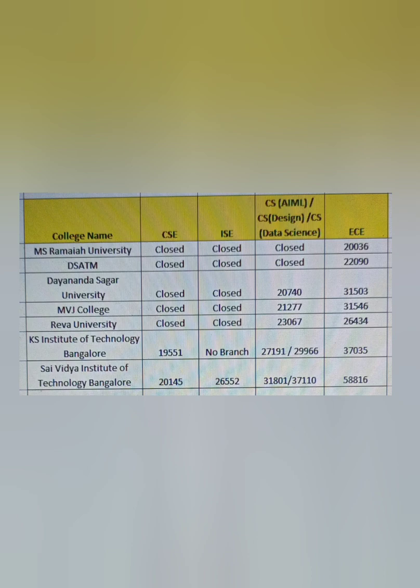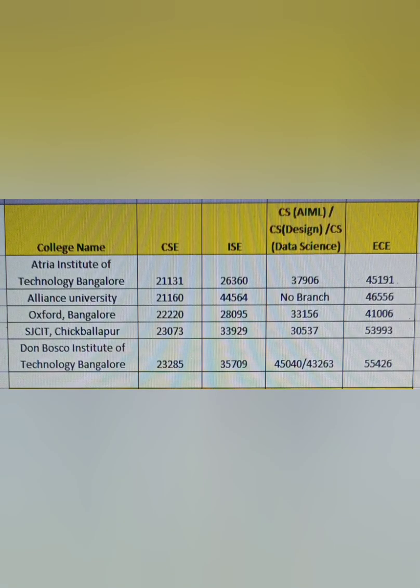I'm discussing only the first round cutoff from last year — expect similar cutoffs this year as well. ECE closed at 37,000. For Sai Vidya, which I've covered in a separate video, CSE closed at 20,145 last year, ISE at 26,000, CSE-specific branches between 31,000–37,000, and ECE at 58,000. In the first round, cutoffs are very low, so if you don't do your option entry intelligently with a large number of options, you may not get any seat allotted.